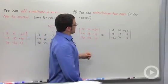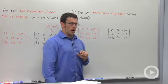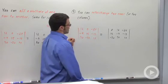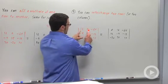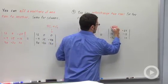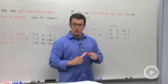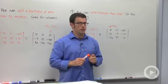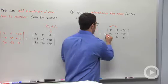And the third thing you can do is interchange two rows or two columns. So here, for example, say for some reason I want to have this 0 on the left, I can just switch the first two columns. So these two columns have been switched. Whenever you switch two rows or two columns, it changes the sign of the determinant.